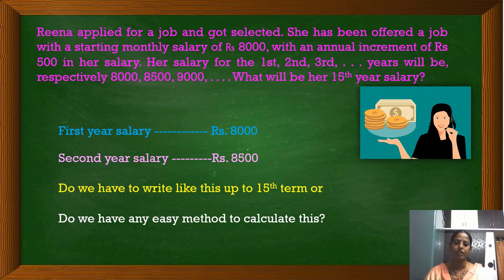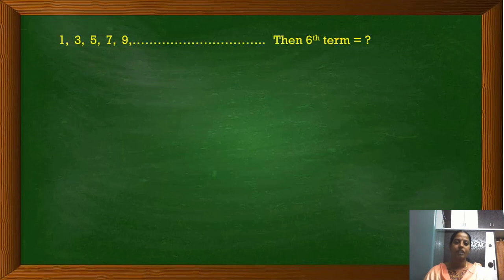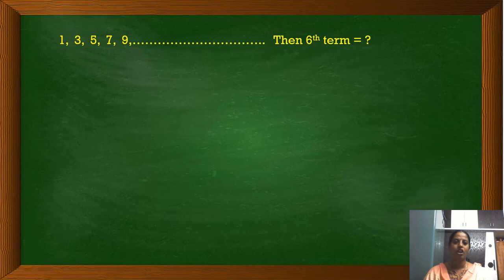Let us learn the easy method by taking a simple example. We have an arithmetic progression 1, 3, 5, 7, 9, etc. For this arithmetic progression, we have to find the 6th term. We know that in arithmetic progression, the numbers are arranged in such a way that a definite number is added to get the next number. That definite number is known as common difference.